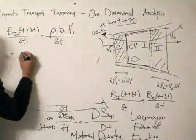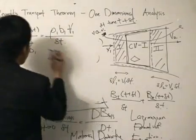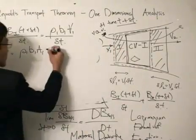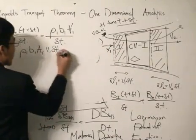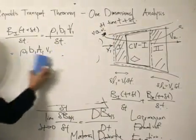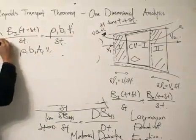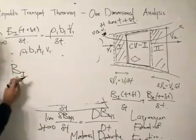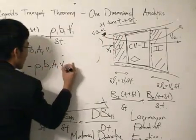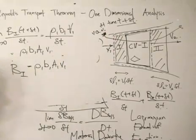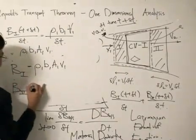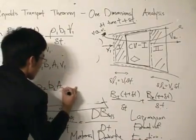However, we can re-express V1 as the area of 1 multiplied by the small change in length, which equals V1 times delta-t. We then divide that by delta-t. If we take the limit as delta-t tends towards 0, we get the rate of change of the extensive property of region 1: density 1 times b1 times A1 times V1. And obviously, doing the same for B2, we can write: B2 equals density 2 times b2 times A2 times V2.